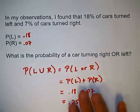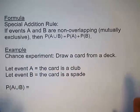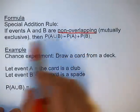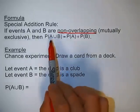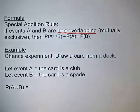What we just applied there is what we call the special addition rule. The special addition rule says that if events A and B are non-overlapping, otherwise known as mutually exclusive, then the probability of A or B is simply the probability of A plus the probability of B.